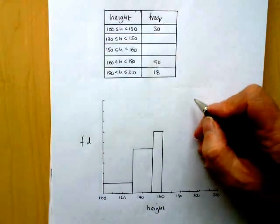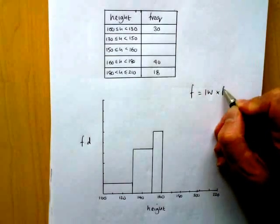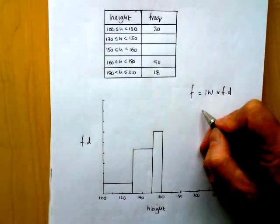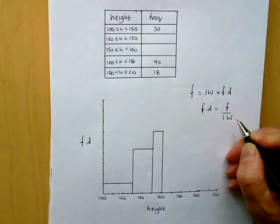Once again, I'll remind you that I'll be using the formula: frequency equals interval width times frequency density, or in its rearranged form, frequency density equals frequency divided by interval width.